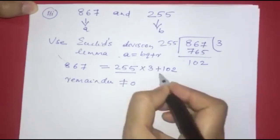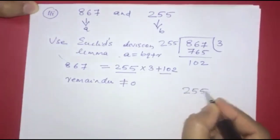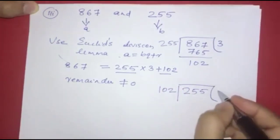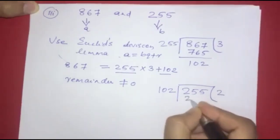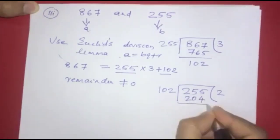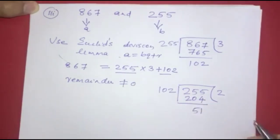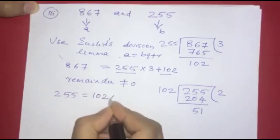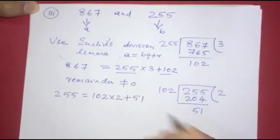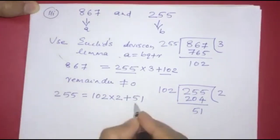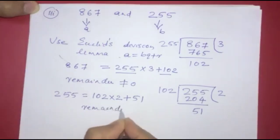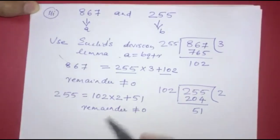Since remainder is not zero, we apply Euclid's division lemma again with 255 and 102. We divide 255 by 102 to get quotient 2 and remainder 51. So 255 is equal to 102 into 2 plus remainder 51.